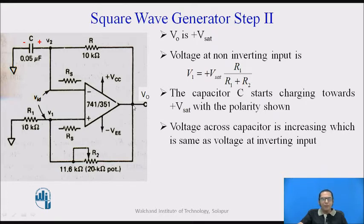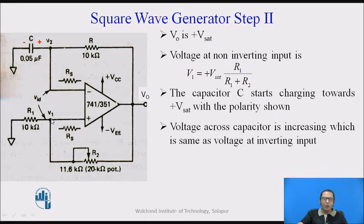As step one of the analysis, the output V0 is plus-Vsat. When the output is plus-Vsat, part of the output is fed back to the input. Applying the voltage divider rule, the voltage at V1 can be found as: V1 = plus-Vsat × R1 / (R1 + R2). So the voltage at V1 is less than Vsat and is fixed because the output is fixed at plus-Vsat.